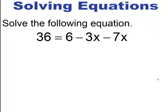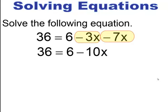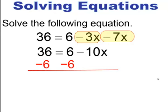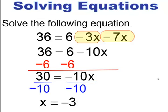Be careful here. The variables are on the right-hand side, but they're both on the same side of the equal sign, so it's combine like terms. I end up with negative 3 minus 7, which gives me minus 10x. So the equation comes down to 36 equals 6 minus 10x. Now it's a two-step equation — subtract 6 from both sides to get 30 equals negative 10x, then divide both sides by negative 10, giving a solution of negative 3.